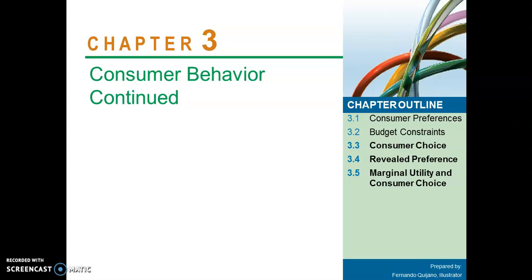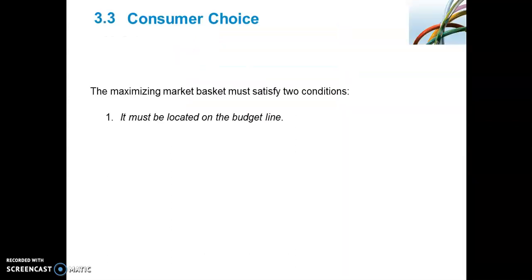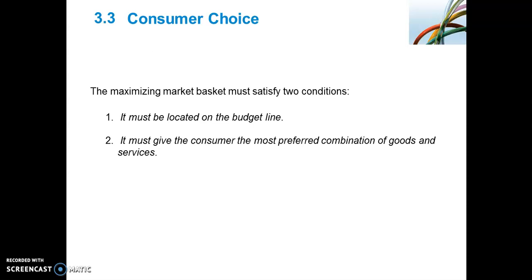Note that Section 3.6 is not covered in Second Year Microeconomics. Let's begin with Consumer Choice. We had a look at Consumer Preferences and Budget Constraints in Sections 3.1 and 3.2 respectively. Based on our understanding of these two sections, we can now determine how consumers decide how much of which good to buy.